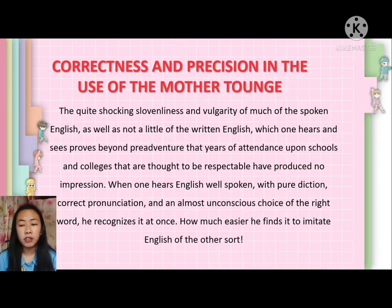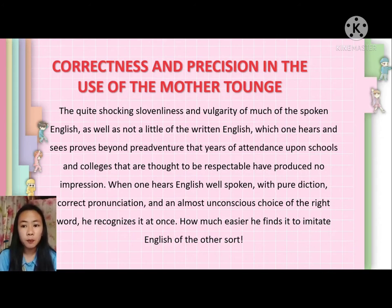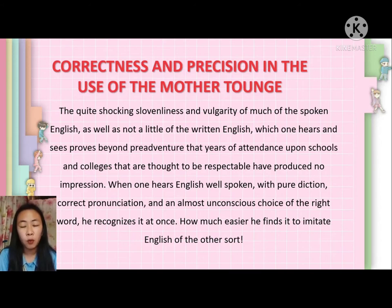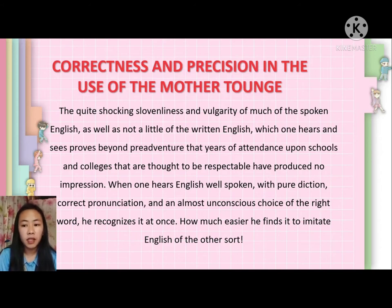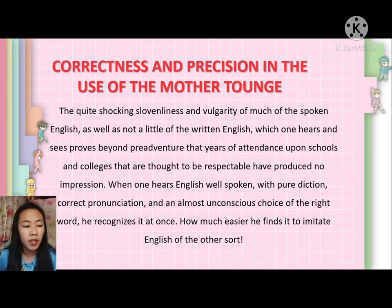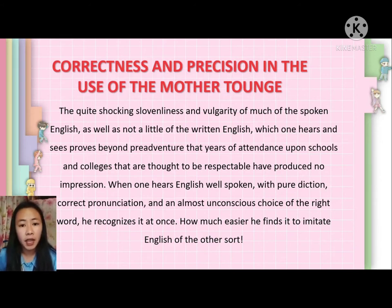Correctness and precision in the use of the mother tongue: the quaint, shocking slowness and vulgarity of much of the spoken English, as well as not a little of the written English which one hears and sees, proves beyond peradventure that years of attendance upon schools and colleges have produced no impression. When one hears well-spoken English with pure diction, correct pronunciation, and an almost unconscious choice of the right word, he recognizes it at once. As an educated man, it is a must that you know the proper use of a language, because correctness and precision in the use of the mother tongue is the first trait of an educated man, according to Butler.